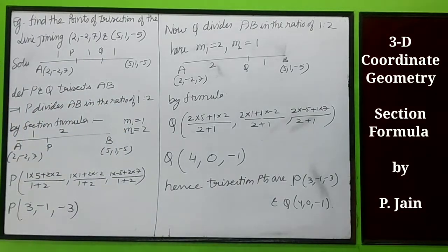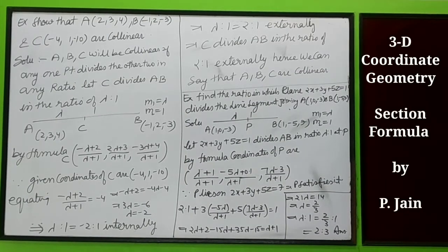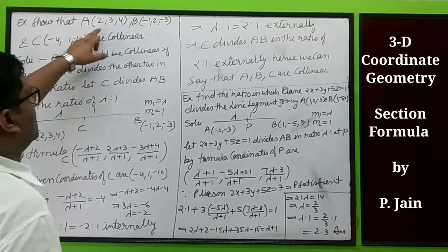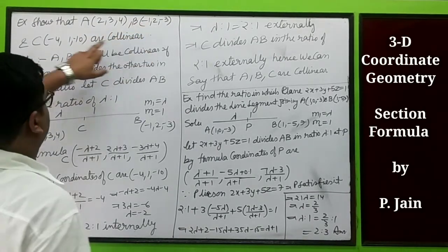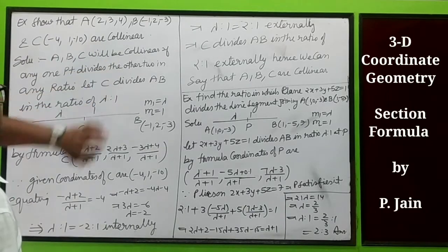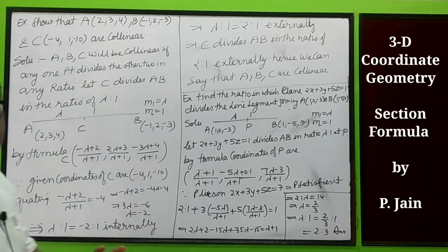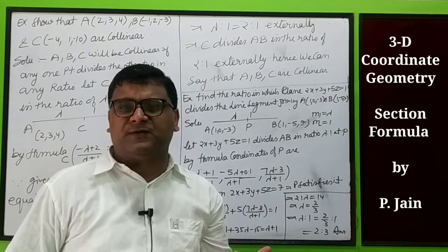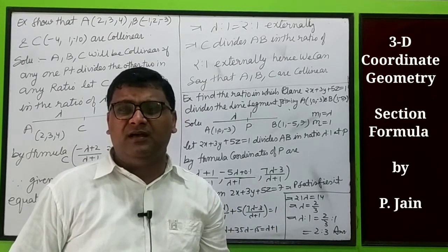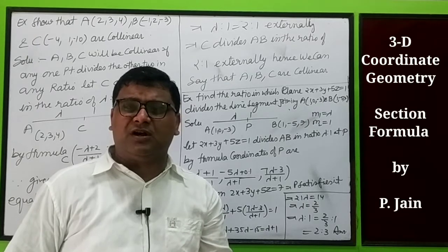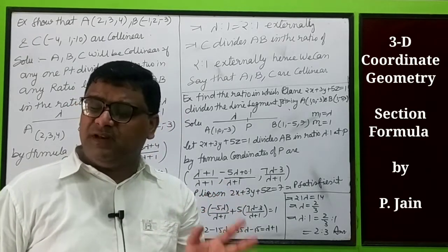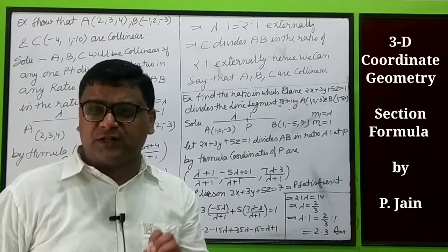A very simple yet very important example of trisection. Now we have to show that points A(2,3,4), B(-1,2,-3), and C(-4,1,-10) are collinear. We know 3 points can be collinear. There is another method to solve by distance formula, but here we solve it by section formula. If three points are collinear, then surely one of these points will divide the line joining the other two in some ratio.